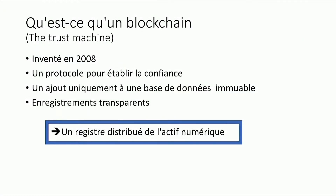So, what's a blockchain? Often referred to as the trust machine of the internet, it's a protocol to create trust between peers, which forms an immutable database where records can only be appended. No deletion, no alteration of the records, only appended. All records will be transparent to everyone on this network, which creates a distributed ledger.